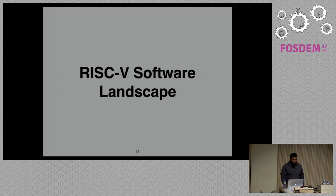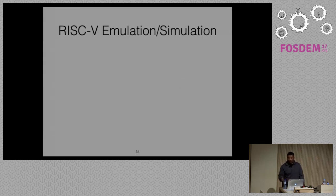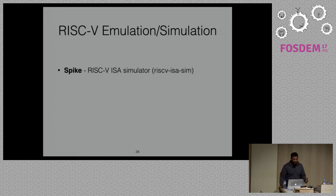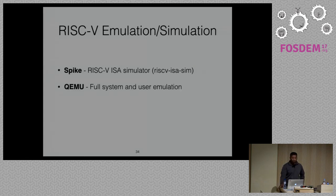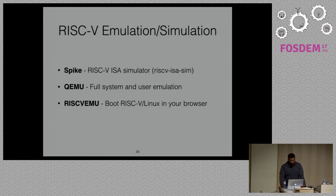On the software landscape, there's been a lot happening in the last 6 to 12 months. If you don't have FPGAs or RISC-V hardware, you can use an emulator. Spike is the standard RISC-V simulator — also called RISC-V ISA sim, it's the golden model; every specification update goes into Spike. QEMU also has RISC-V support, though it's not upstream yet, supporting both full system and user emulation. There's also RISC-V emu built by Fabrice Bellard — you can boot RISC-V Linux in your browser, and it even has 128-bit support.